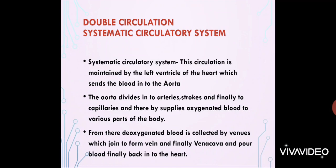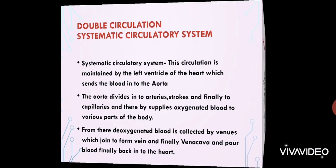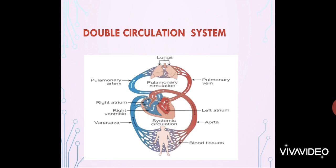In systemic circulation, this circulation is maintained by the left ventricle, which sends blood into the aorta. The aorta divides into arteries, arterioles, and finally capillaries, supplying oxygenated blood to various parts of the body. From there, deoxygenated blood is collected by venules, which join to form veins and finally the vena cava, pouring blood back into the heart. You can draw this double circulatory system diagram, which shows the heart, lungs, and how blood circulates through the human body.